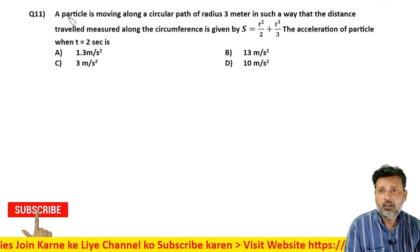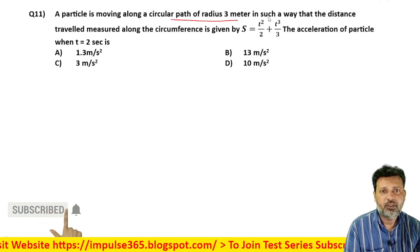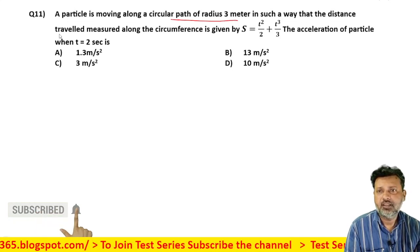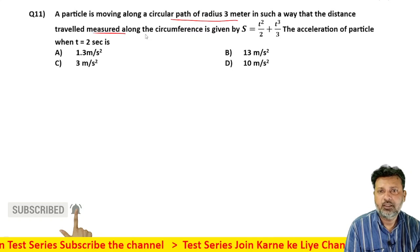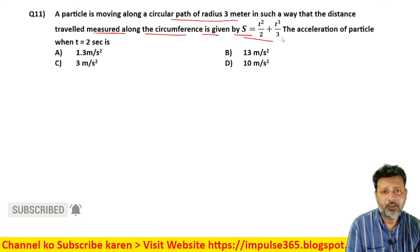Chalo, next question. A particle is moving along a circular path of radius 3 meter in such a way that the distance traveled measured along the circumference is given by s equals t square by 2 plus t cube by 3.